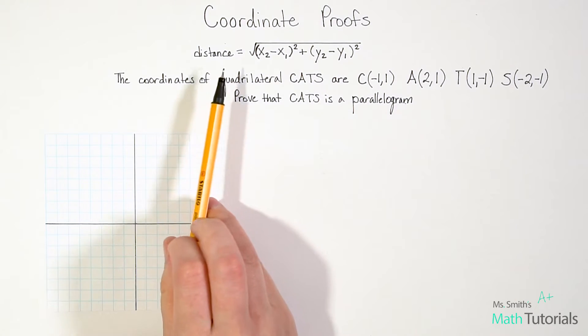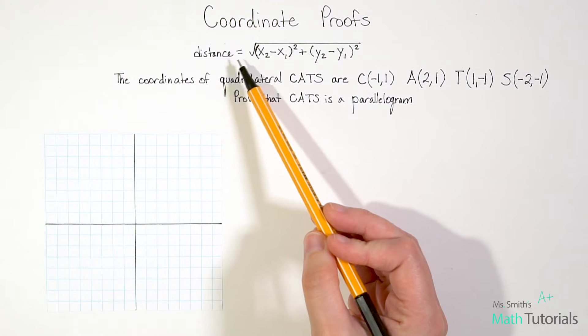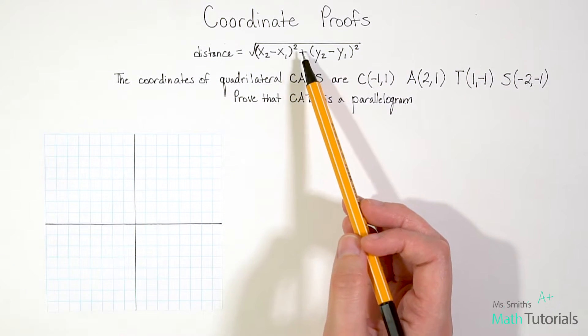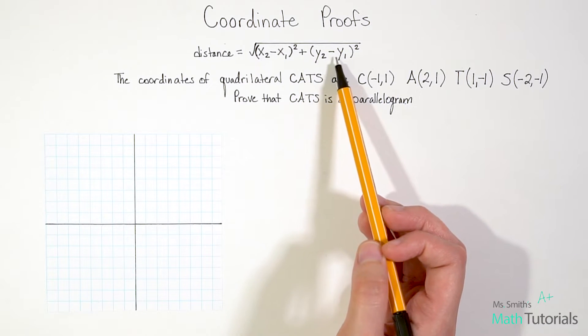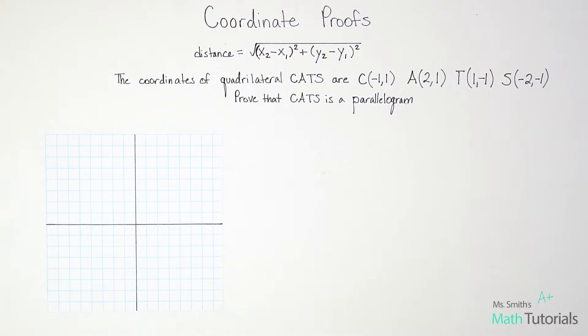We do need to remember the distance formula. I've noted it up here: the distance formula is the square root of x2 minus x1 squared plus y2 minus y1 squared. If it's been a while since you've done the distance formula, you might want to stop and review my video that's on the distance formula. But if you remember that or it's pretty familiar to you, then you're ready to dive right in with coordinate proofs.